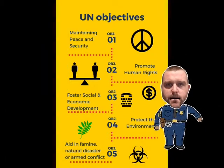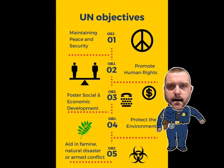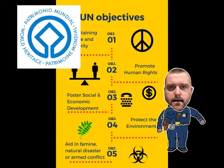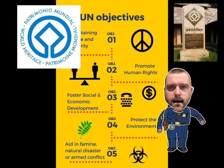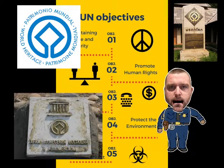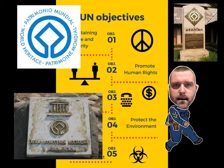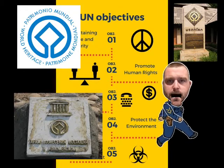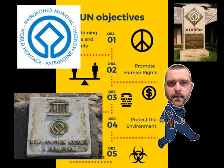Their fourth objective is protecting the environment. The main way they do this is by having a World Heritage List. Certain environments that are particularly of note or value are put on this list, and certain guidelines need to be followed by the country. They'll then give money to that country for ensuring those guidelines are met, hopefully to protect environments.